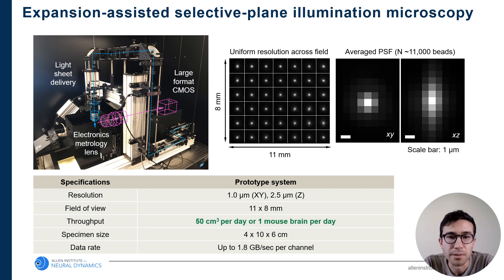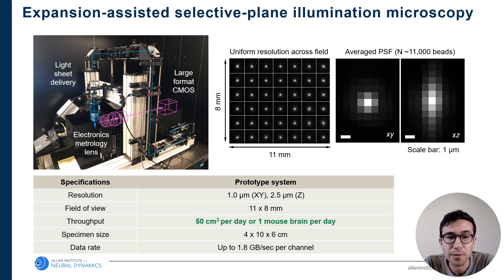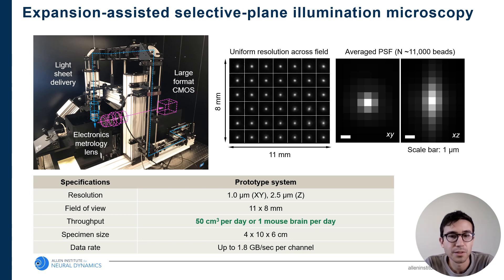This is a photograph of our prototype new light sheet system in the lab. Annotated with magenta cartoons, you can see where the electronics metrology lens is, capturing imaging content and sending it to the large format CMOS sensor. When we characterize the system and look at resolution across the massive field of view, it's extremely uniform. We have near isotropic resolution: in the top right, you can see averaged point spread functions — extremely tight in X and Y and almost as good in Z. The specifications are: about one micron resolution in X and Y, two and a half microns in Z, a field of view of about one centimeter squared, and a throughput of about 50 cubic centimeters of volumetric imaging per day, or about one mouse brain per day. The system can accommodate tissues up to four by ten by six centimeters, all captured at nearly two gigabytes per second.